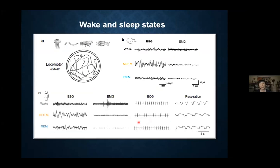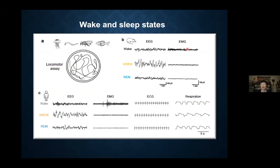For non-mammalian animals, sleep is detected exclusively based on a lack of movement. In order to score a sleep episode, the animal has to stay still for a certain period of time, and if you apply mild sensory stimulation, they show no motor response. For mammalian animals, we measure EEG and EMG. The EMG measures skeletal muscle tone, and during sleep there's a clear reduction of EMG.